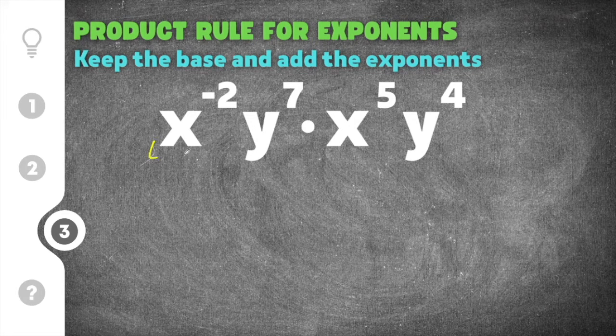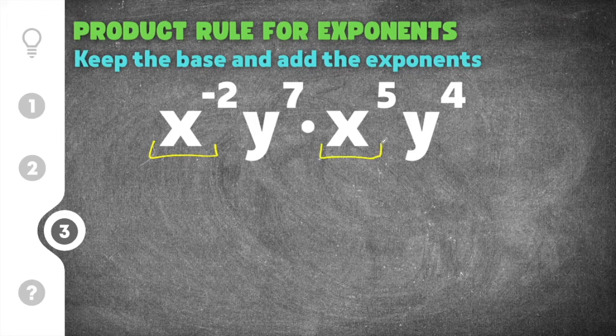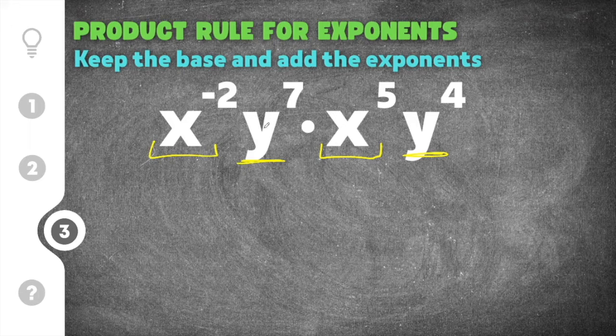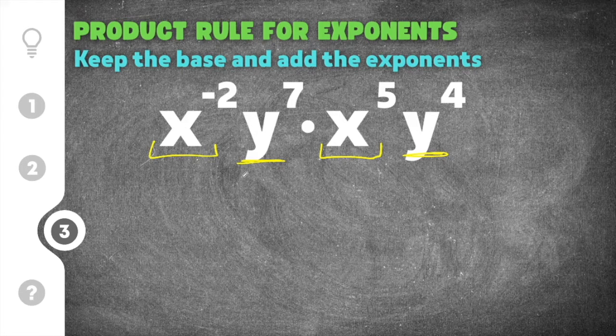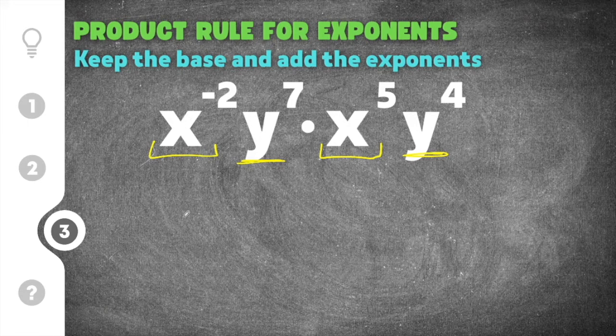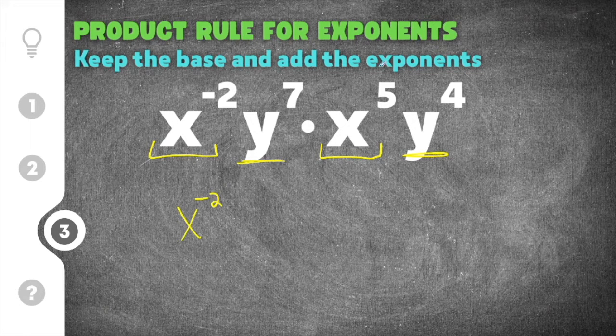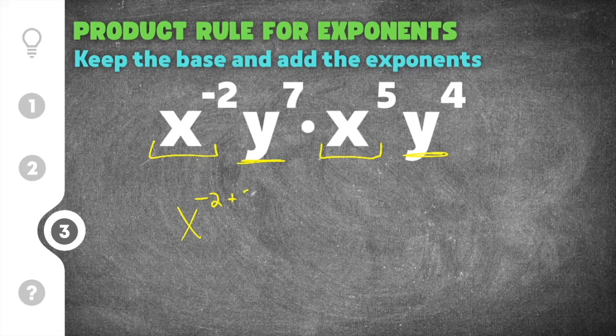This means that we can multiply the x's together and we can multiply the y's together, but we can't multiply an x with a y. I'm going to go ahead and write my first base which is x and it is to the negative second power, and that's going to go with the other x which is the fifth power.